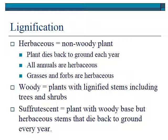Lignification is important because it influences many ecosystem characteristics — fire behavior, forage value, and watershed value. Herbaceous plants are those that have very little lignin; they're non-woody and die back to the ground every year. All annuals are herbaceous — they don't have enough time to produce wood or lignified material. All grasses and forbs are herbaceous. Woody plants have lignified stems — trees and shrubs. There's also an unusual term: suffrutescent, for a plant that dies back to the base but has a woody base. Winter fat is one example — it has herbaceous material above but dies back to a woody base each year, somewhere between woody and herbaceous.